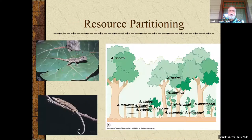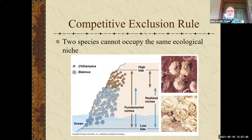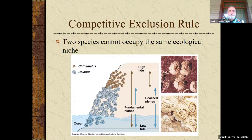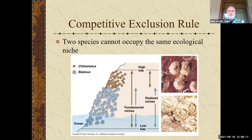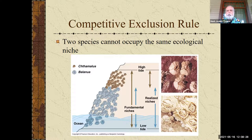Here is a great example of the competitive exclusion rule. This was done by Dr. Castro, who was actually over at Cal Poly, and what they were looking at is how barnacles are living on the coast. A niche, as a simple definition, is like a job — what do they do? These guys are filter feeders. There are different types of niches I want you to know: a fundamental niche is the niche you would use if you had no competition, and a realized niche is actually where you end up and what you actually do.